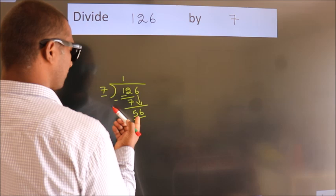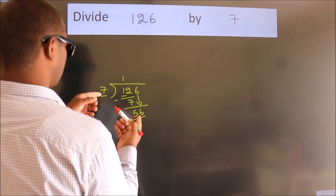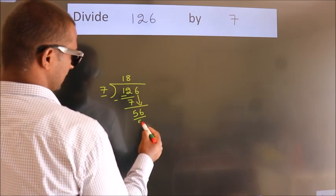When do we get 56? In the 7 table. 7 eights 56.